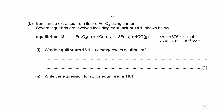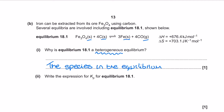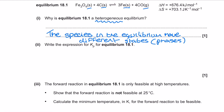Moving on to a different section of the same question and keeping with this theme of crossover: before we can get to the enthalpy we've got to first address equilibrium, and we're being asked why equilibrium 18.1 shown at the top of the question is a heterogeneous equilibrium. The straightforward answer is that the species in equilibrium 18.1 have got different state symbols. There's a link at the top of the screen to a separate tutorial video on heterogeneous equilibrium if you'd like to know more.